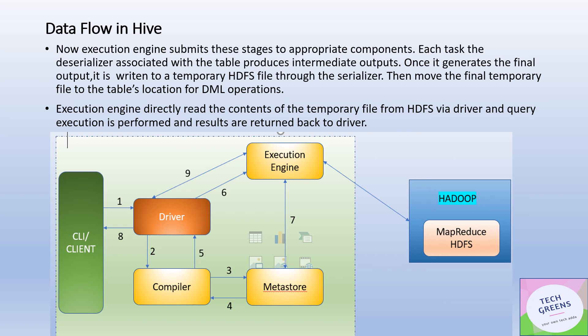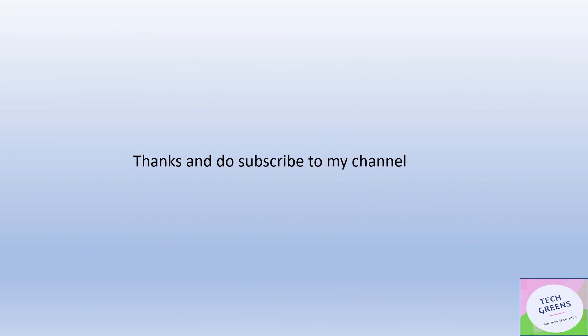That's how the execution flow happens in Hive: from client to driver, driver to compiler, compiler uses Metastore to generate an execution plan, that plan is submitted to the execution engine through the driver, the execution engine interacts with the underlying data in HDFS, performs query execution, and returns the result back to the driver, which finally returns it to the client. That's it for this video about Hive internals. Hive is a data warehouse solution on Hadoop, primarily meant for read/writes and managing large data sets in distributed file systems, providing clients via Thrift protocol, JDBC and ODBC. Query execution is performed via the MapReduce paradigm in Hive.